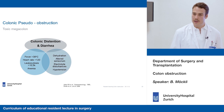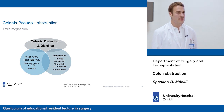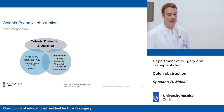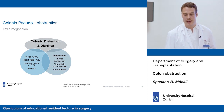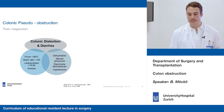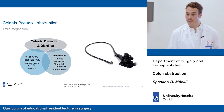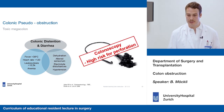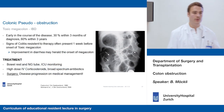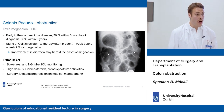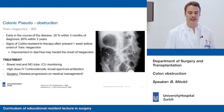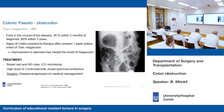Toxic megacolon is defined by colonic distension and diarrhea, plus three factors from: fever, tachycardia, leukocytosis, or anemia, and then one factor from: dehydration, electrolyte imbalances, hypotension, or altered sensorium. Often these patients are very ill. Colonoscopy for workup is not recommended given the high risk of perforation. Toxic megacolon has two main etiologies — one is IBD, most commonly ulcerative colitis. Often these patients present very early in the course of disease: 30% within three months and 60% within three years. Signs of colitis are often present before onset, and any improvement in diarrhea may actually herald the onset of megacolon.